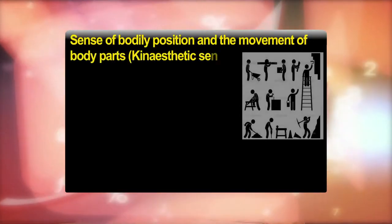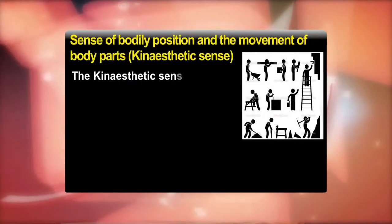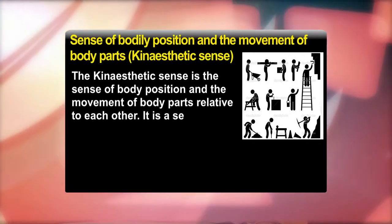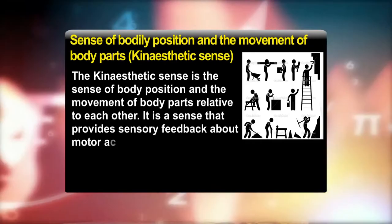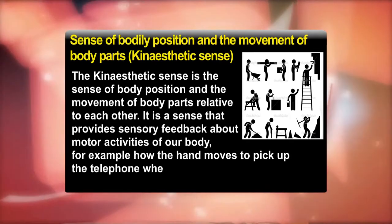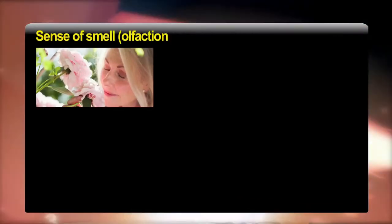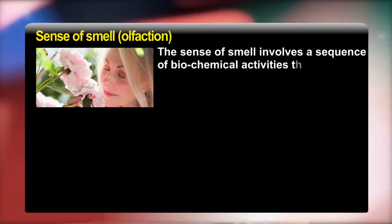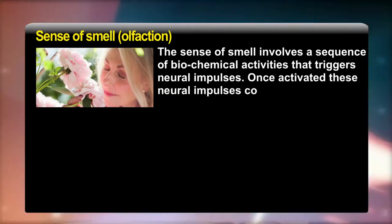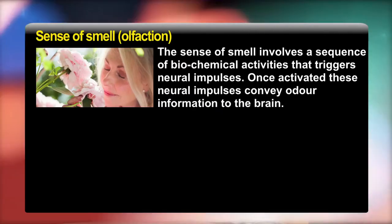The kinaesthetic sense is the sense of body position and the movement of body parts relative to each other. It provides sensory feedback about the motor activities of our body — for example, how the hand moves to pick up the telephone when it rings. The sense of smell, or olfaction, involves a sequence of biochemical activities that trigger neural impulses. Once activated, these neural impulses convey odour information to the brain.